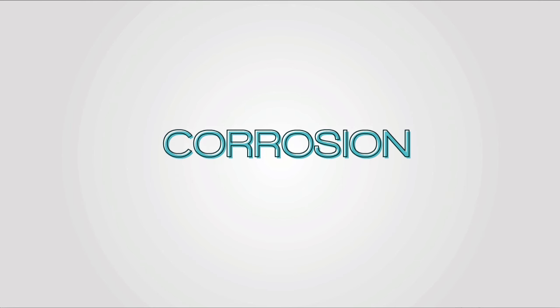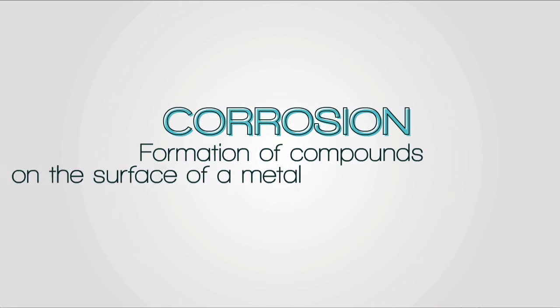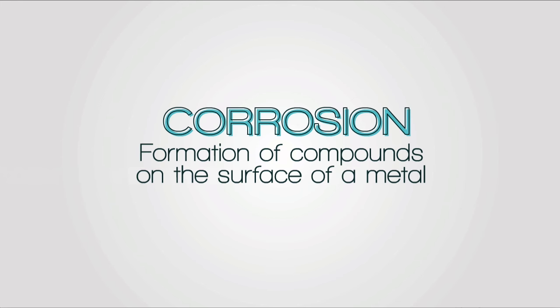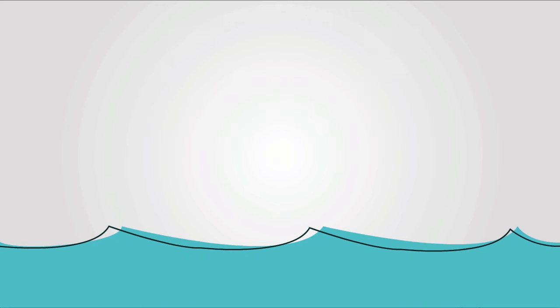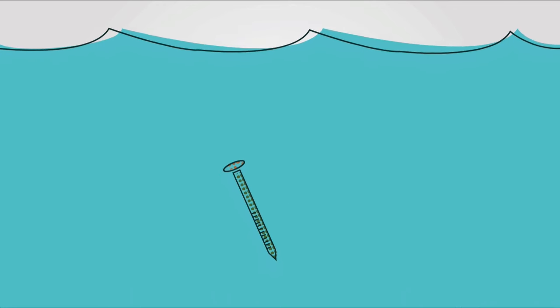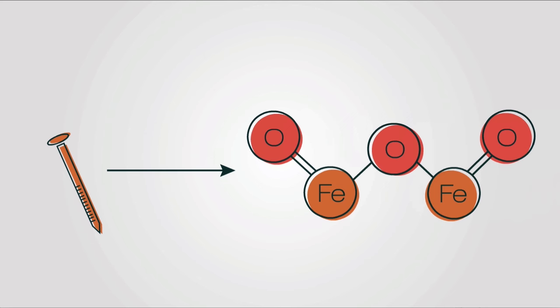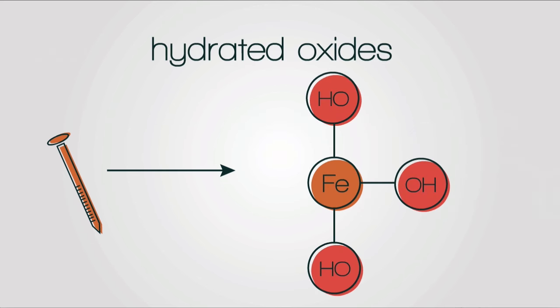This is because of corrosion. Corrosion is described as formation of compounds on the surface of a metal when it is exposed to air and/or water or an electrolyte like salt water. Typically, once a metal corrodes, it forms compounds known as oxides or hydrated oxides.